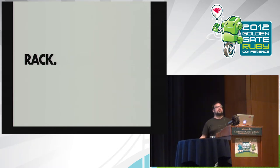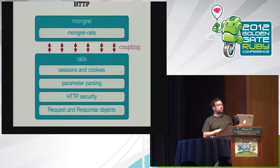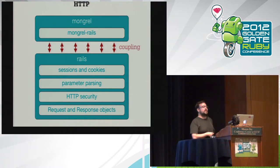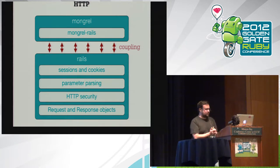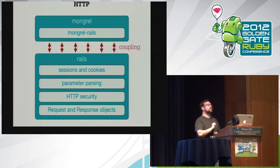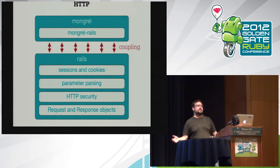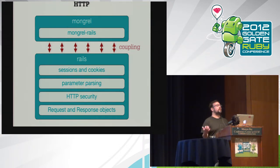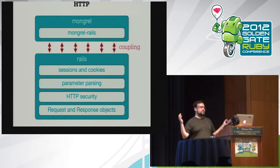Rack is a really good example of this lifecycle. Early on in the days of Rails, the architecture was basically: there was Rails with a bunch of stuff in it, and then there was Mongrel, which had Mongrel Rails inside of it — they were basically the same thing. It was one giant thing — a vertically integrated supply chain.